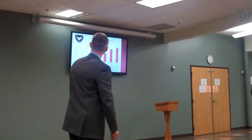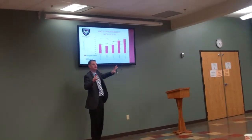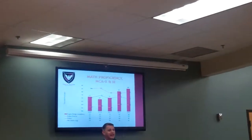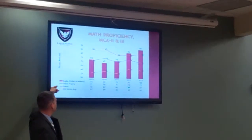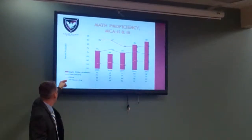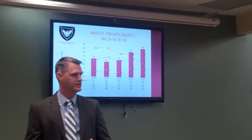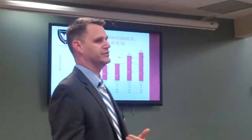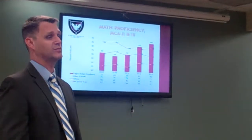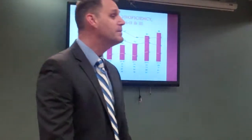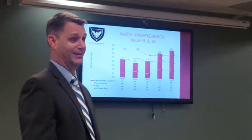Let's look at math. Eagle Ridge Academy was at 73% and is now at 88%. You can see Eden Prairie has kind of stayed the same, Edina has pretty much stayed the same, the state went up a little bit. Eagle Ridge Academy has gone up 15 points since 2009. Eagle Ridge Academy, as a K-12 school district, has the highest math scores in the state. These students — your children — work so hard. That's the facts of it.